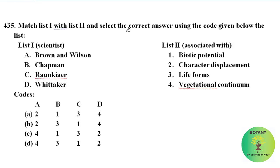Match list 1 (scientists) with list 2 (associated concepts). Brown and Wilson are associated with character displacement theory, proposed in 1956. Chapman provided the biotic potential theory in 1928. Raunkiaer is associated with life forms, providing his classification in 1934. Whittaker gave the vegetational continuum concept in 1975. The correct option is option A.